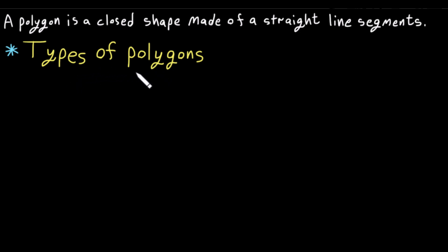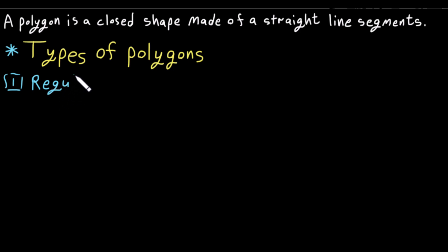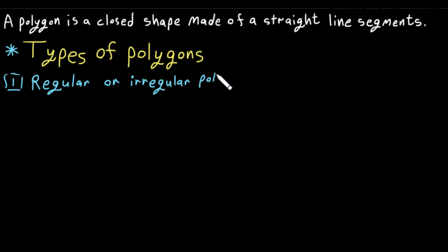Now let's classify polygons based on different properties. The first classification is regular or irregular polygons, and the second classification we'll cover shortly.